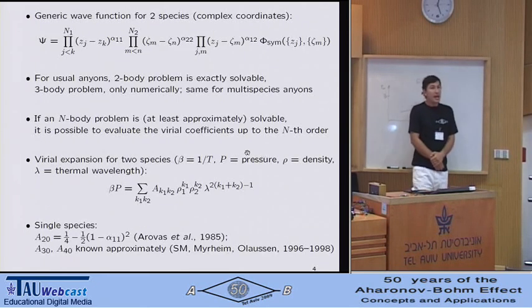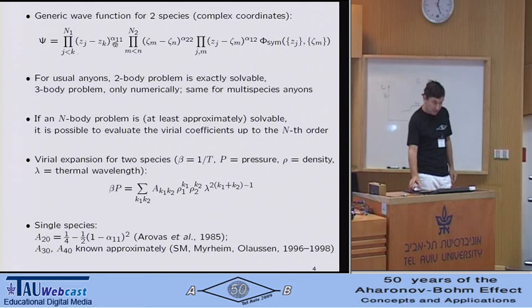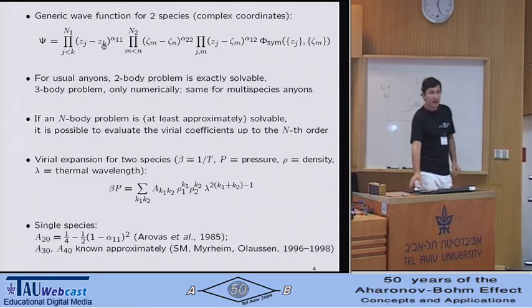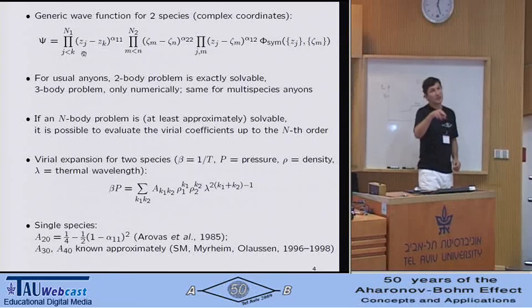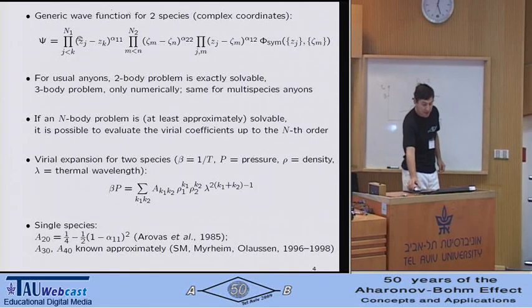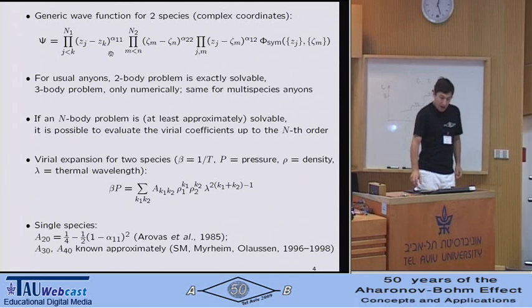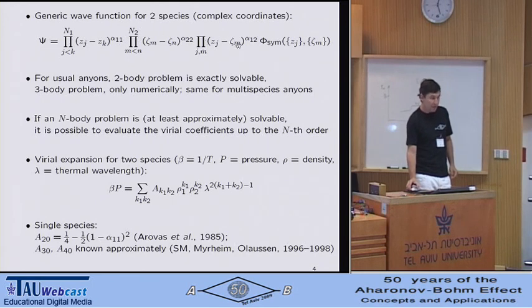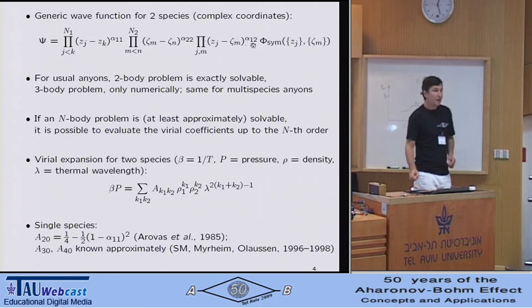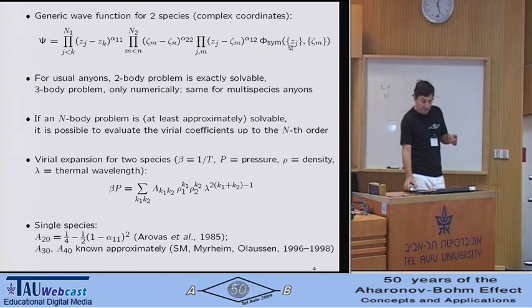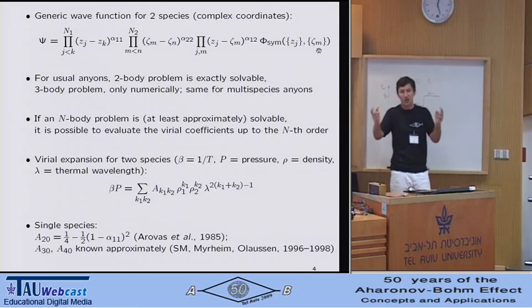How does the wave function that satisfies these interchange conditions look? The expression is here. And you will recognize the familiar Jastrow-Laughlin type factor, except alpha is fractional here, not integer. You see that when we interchange particles J and K, the difference of their complex coordinates picks up a phase of e^(iπ), hence this picks up the phase of e^(iπα). So we have a factor like this for species one, a factor like this for species two, and a cross-species factor involving the cross-species statistical parameter.